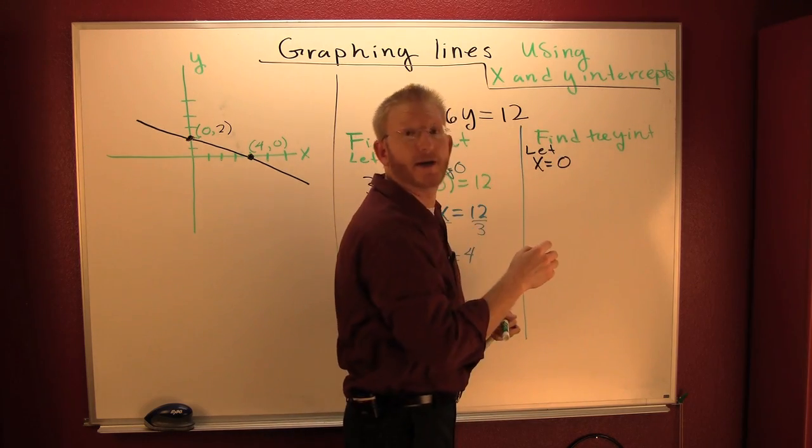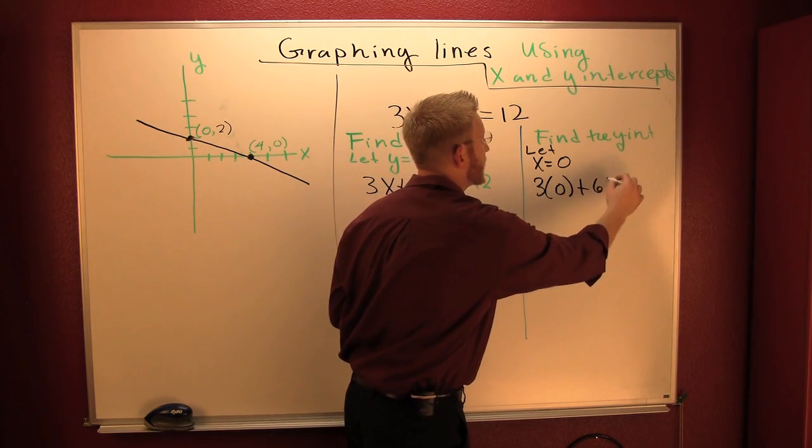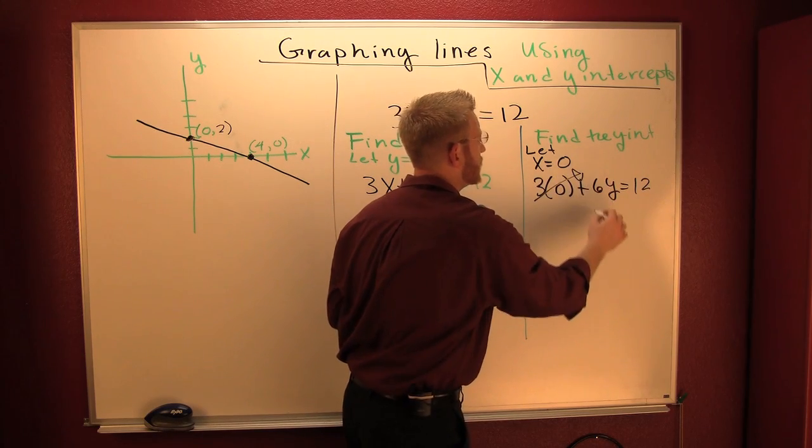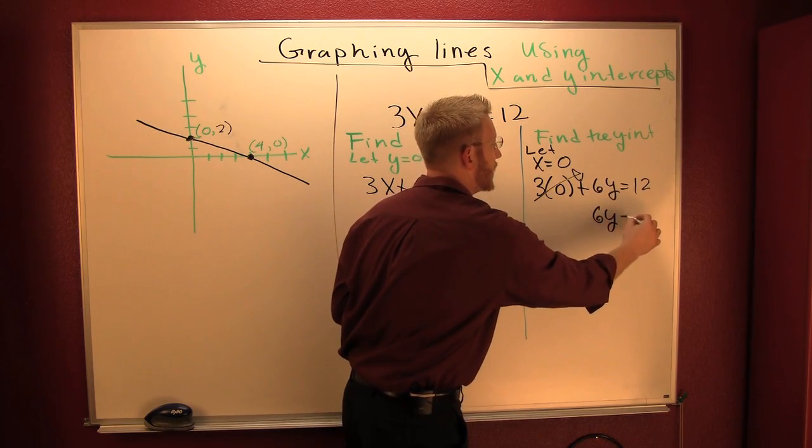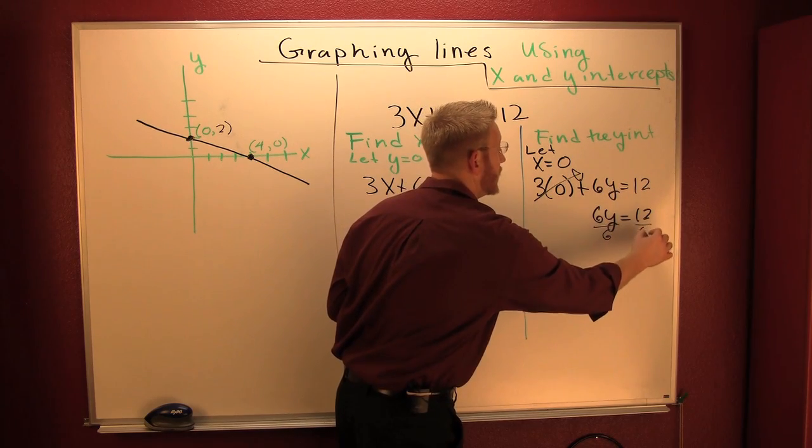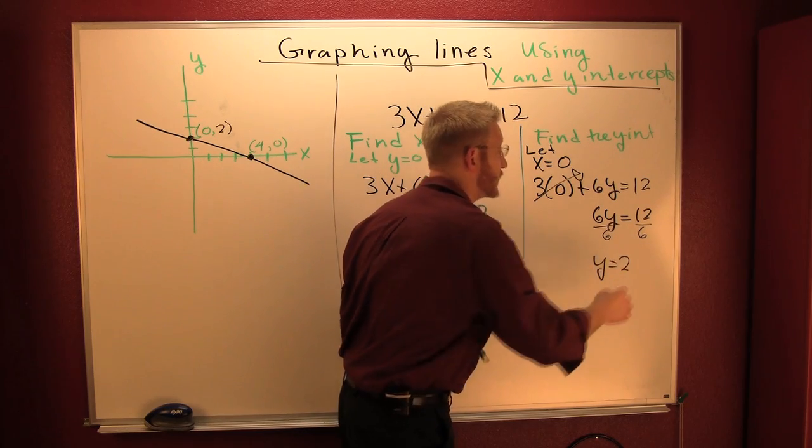I'm going to throw it into my equation. I have 3 times 0 plus 6y is 12. 6y is 12. Divide. What you do onto one side you must also do onto the other. And y turns out to be 2.